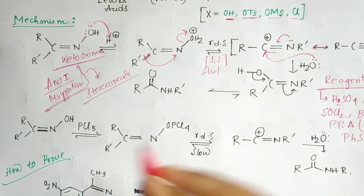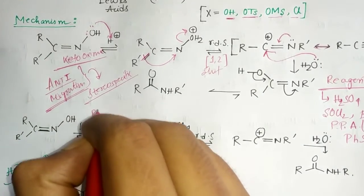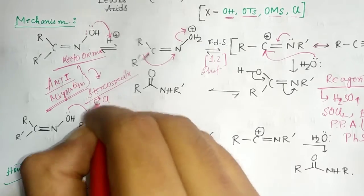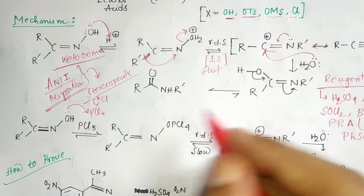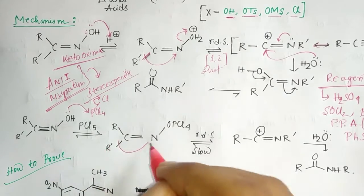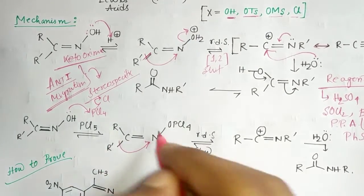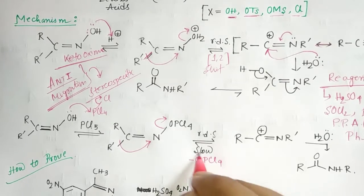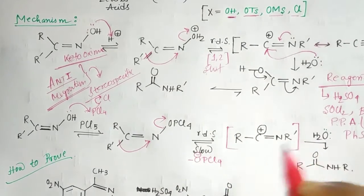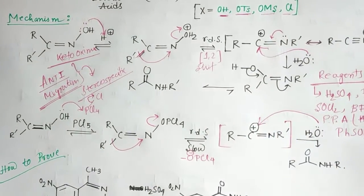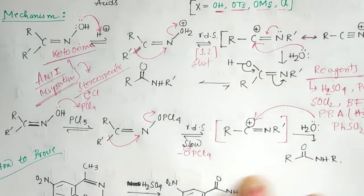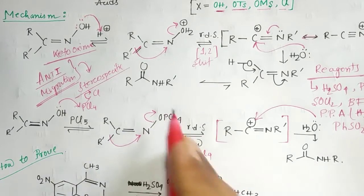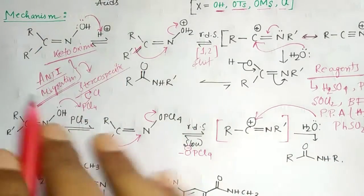Using PCl₅, we can write it as PCl₄⁺ and Cl⁻. The lone pair attacks the phosphorus center and Cl leaves, giving an OPCl₄ derivative. After that, the R' group migrates because it is anti, and it leaves the system, giving an OPCl₄⁻ intermediate. Water then attacks and you get the amide product — the product is the same, but the pathway with PCl₅ is slightly different.